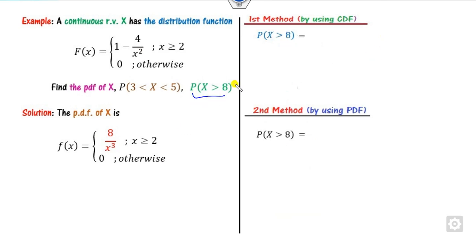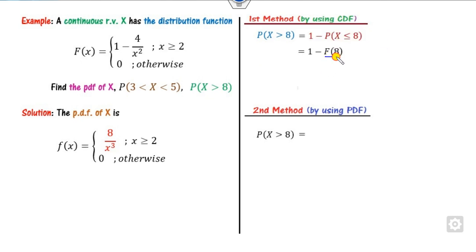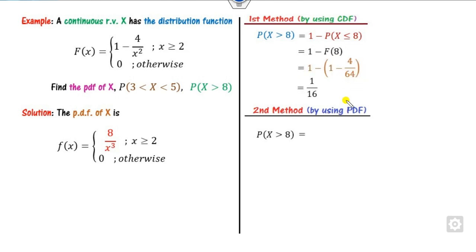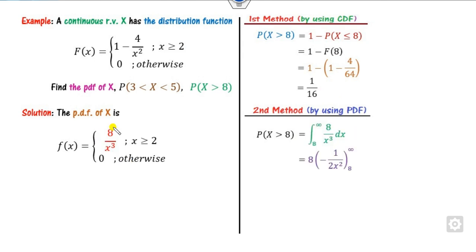For the second part, we can write P(X ≤ 8) = F(8). Where does 8 lie? It lies in the relevant case, giving 4/64 = 1/16 as the right answer. Using the PDF method, integrate from a to infinity of f(x)dx to get the same answer.